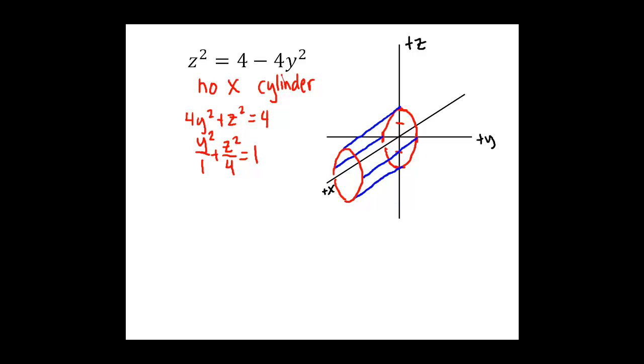So what we have here, we started with our generating curve, the ellipse, 4y squared plus z squared equals 4 in the yz plane. I drew extensions of that at some selected points, extensions parallel to the x axis, and then another copy of that generating curve.